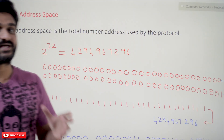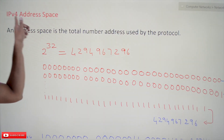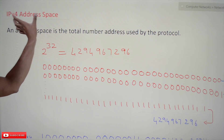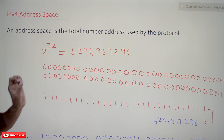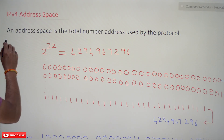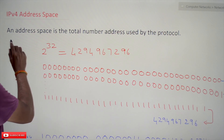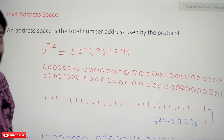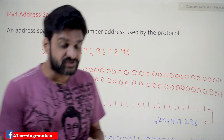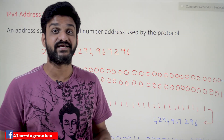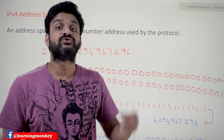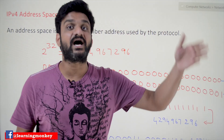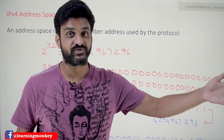Let's try to understand what is IPv4 address space. 'V' stands for version, so this address space is for IPv4, version 4. An address space is the total number of addresses used by the protocol. As we have discussed, the size of the IPv4 address is 32 bits.